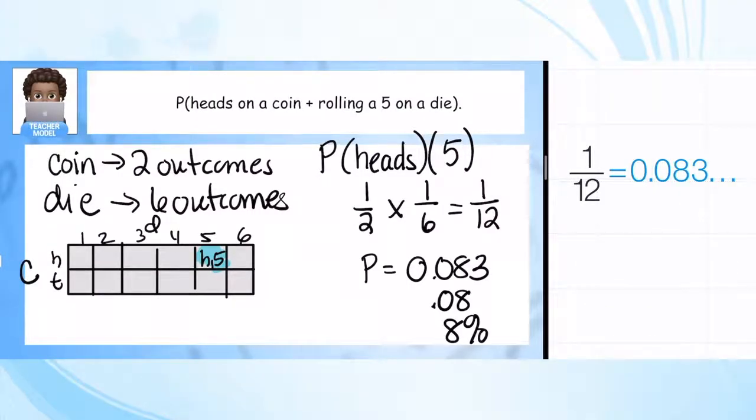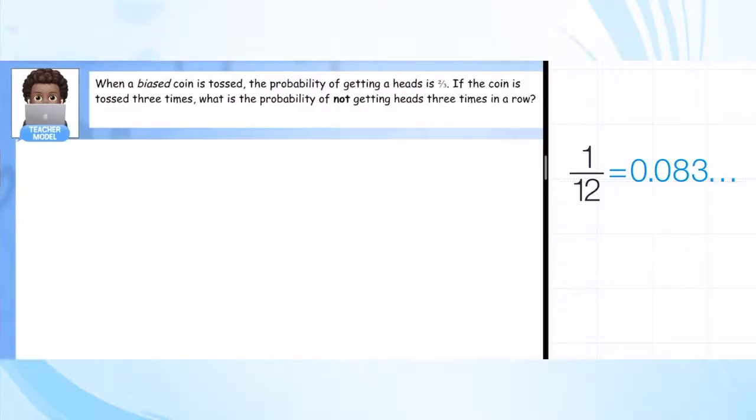And again, the major takeaway is we're going to multiply and find the product of probability of each event. I'm even going to write it over here - we want the product of the probability of each event.